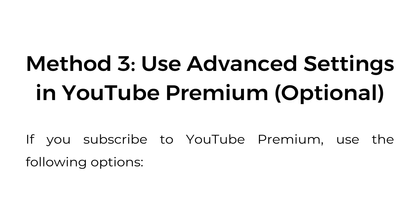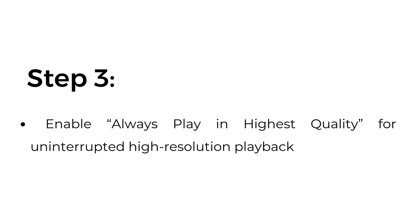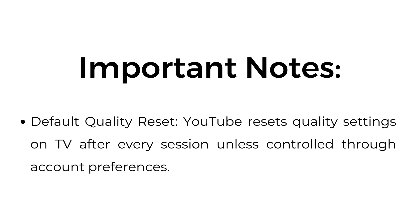Method three: use advanced settings in YouTube Premium (optional). If you subscribe to YouTube Premium, use the following options. Step one — open the YouTube app. Step two — go to settings, then premium settings. Step three — enable always play in highest quality for uninterrupted high-resolution playback.